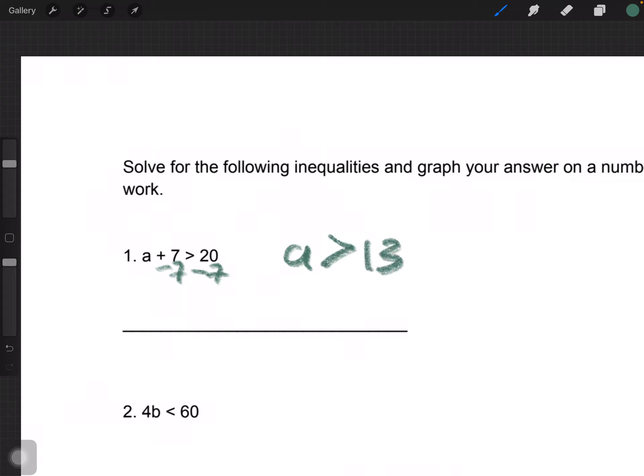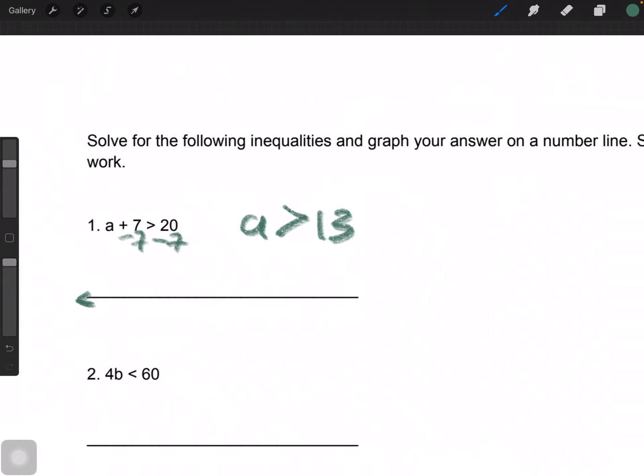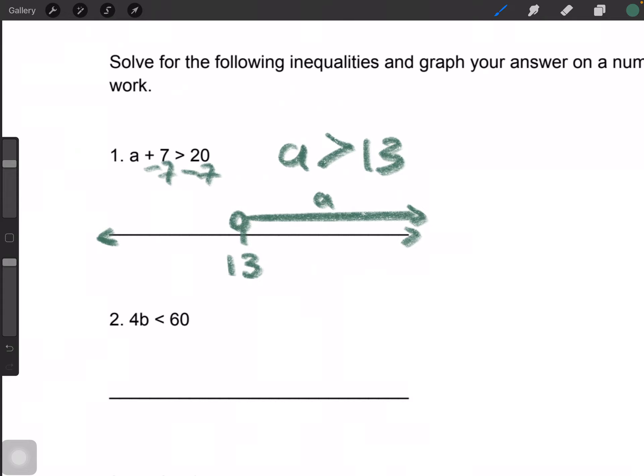20 minus 7 is equal to 13. So what it means by graphing your answer on a number line, it means, okay, well, numbers go on and on and on, right? And we can choose a point right here. This equals 13. And it's telling us that A is greater than 13, right? So we want to keep an open dot and pointing this way. And this is A. A is greater than 13. But it does not equal 13, so you do not fill in the dot.